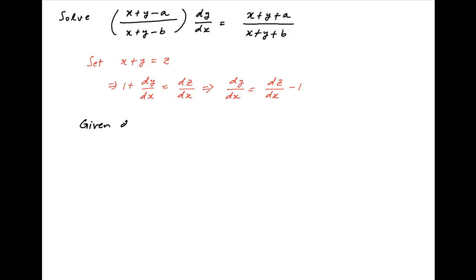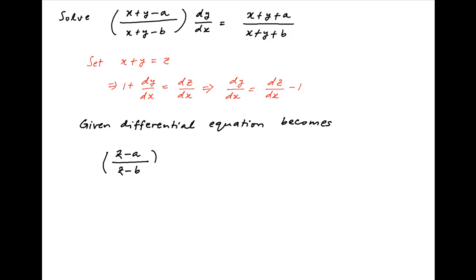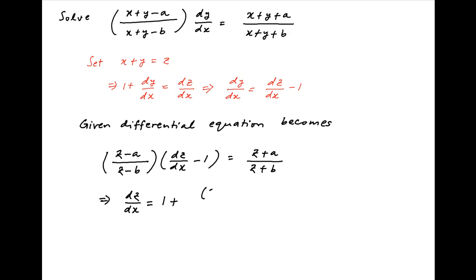Therefore, the given differential equation becomes z minus a divided by z minus b times, in brackets, dz upon dx minus 1 is equal to z plus a divided by z plus b. Therefore, dz upon dx is equal to 1 plus z plus a times z minus b divided by z minus a times z plus b.